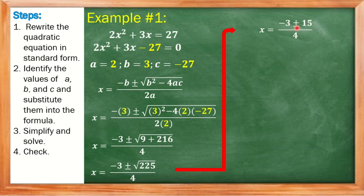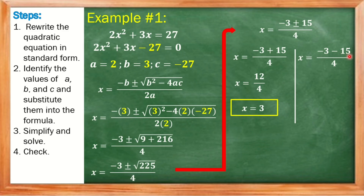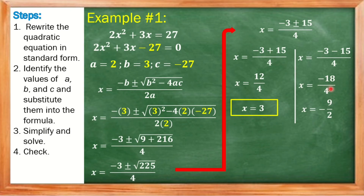Since we have positive and negative 15, we split into two equations. First: X equals negative 3 plus 15, over 4. Negative 3 plus 15 equals positive 12, and 12 divided by 4 equals positive 3 — that's our first solution. Second: X equals negative 3 minus 15, over 4. Negative 3 minus 15 equals negative 18, and negative 18 divided by 4 equals negative 9 over 2 — we found the GCF of 18 and 4, which is 2. That's our second solution.